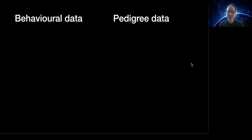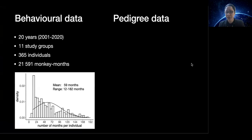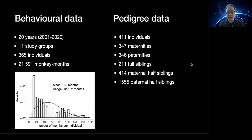Now we can combine our behavioral data with our genetic data. With group scan sampling since 2001, we have proximity data spanning 20 years. The data come from 365 subjects across 11 study groups. Since our sociality measure is compiled by month, we have over 21,000 monkey months as data points for our analyses. On average, we have nearly five years of sampling per subject, but with 12% of our subjects represented by over a decade of sampling. Our pedigree links 411 individuals and contains hundreds of maternities, paternities, and sibships.